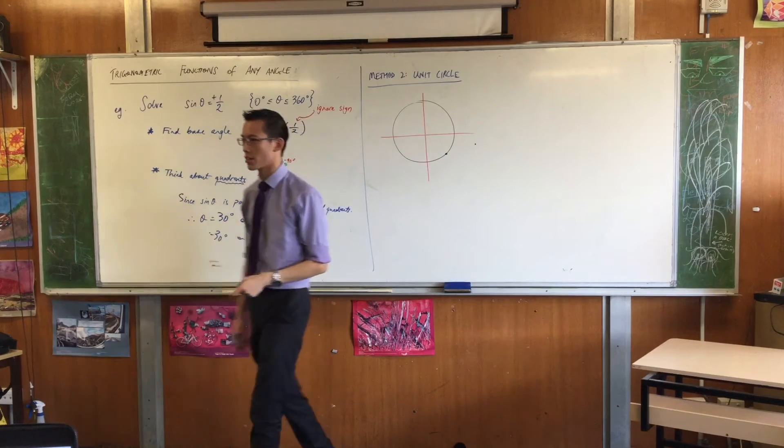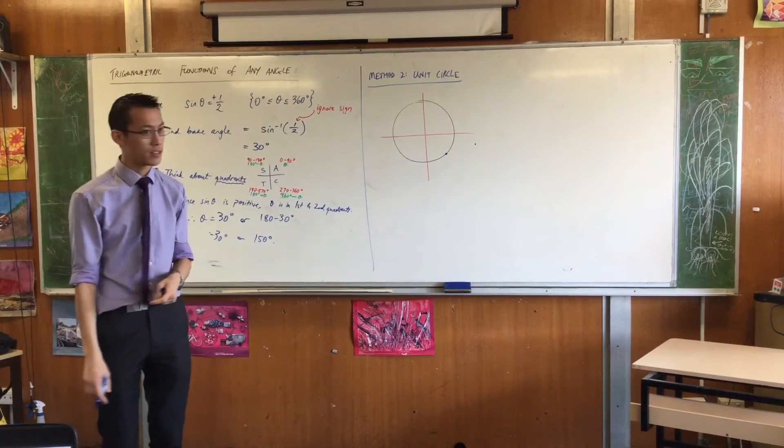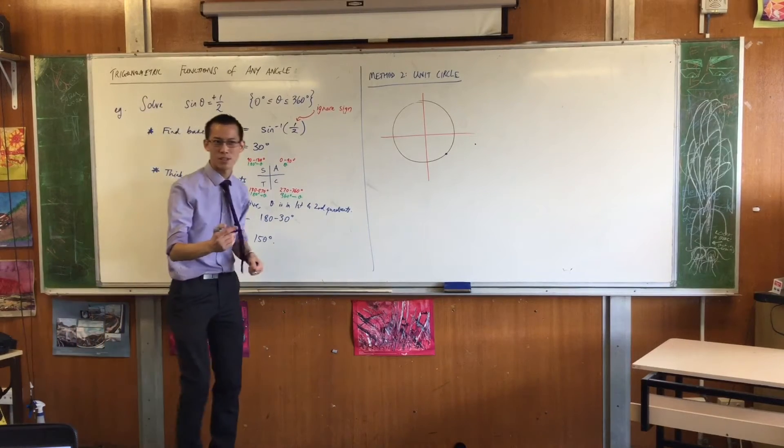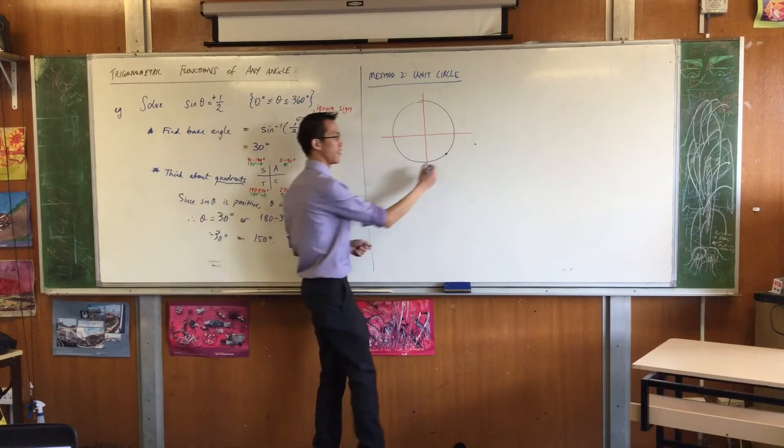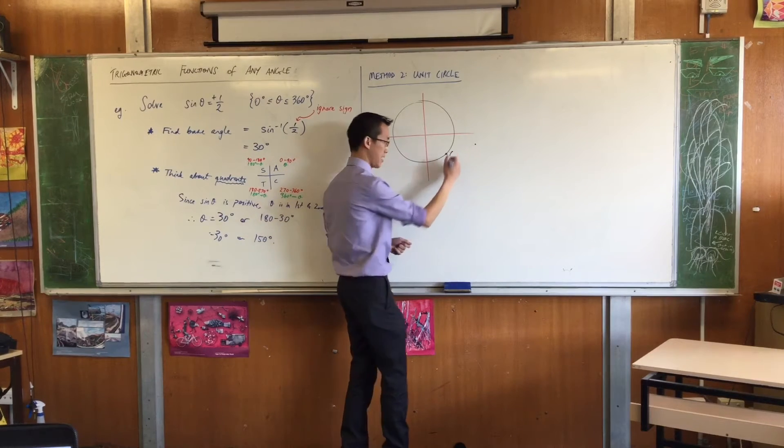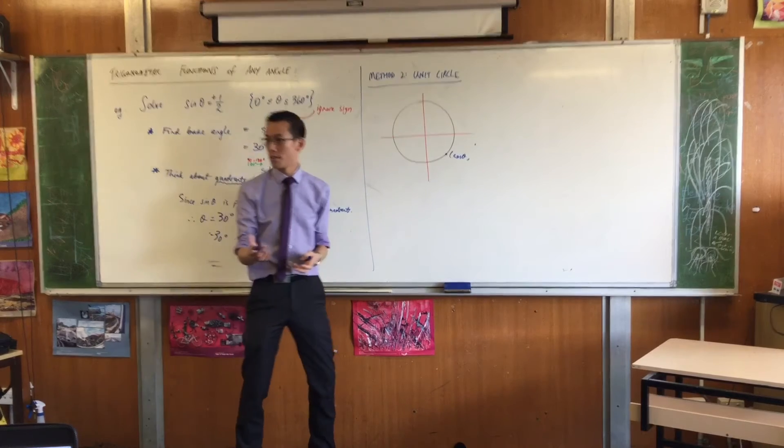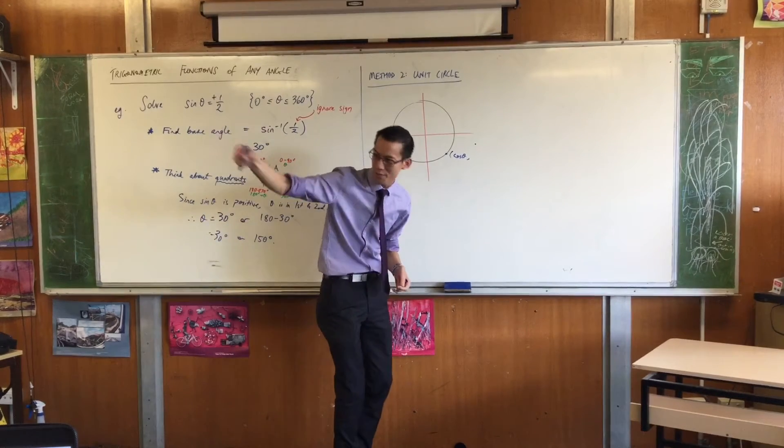One of the coordinates is cos theta, and one is sine theta. Do you remember which one is which? Eric? What are you doing? Cos theta is like the one along the x-axis. Yes. Cos theta is the x-coordinate, and that makes sine theta the y-coordinate. Welcome. Do you want to go around for me? Is that okay?